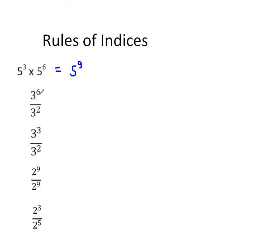If when you multiply you add the indices, then when you divide, logic suggests you should subtract the indices. Write out 3 to the power 6 — that's 3 times 3 times 3 times 3 times 3 times 3 — and divide it by 3 squared. The two 3s at the bottom cancel with two of the 3s at the top, leaving 4 at the top. So 3 to the power 6 divided by 3 squared equals 3 to the power 4. Our second rule: when you divide two numbers with the same base, you subtract the indices.